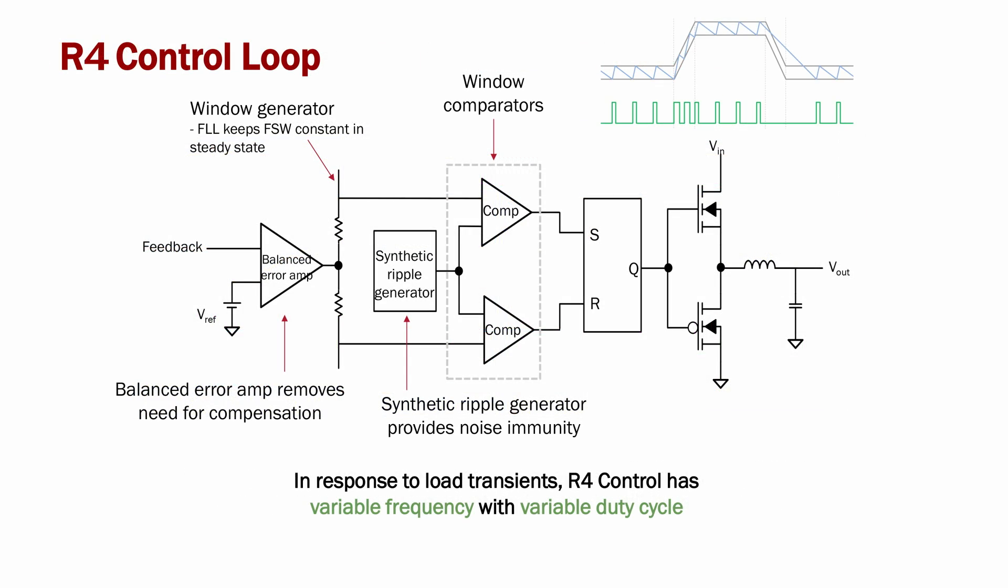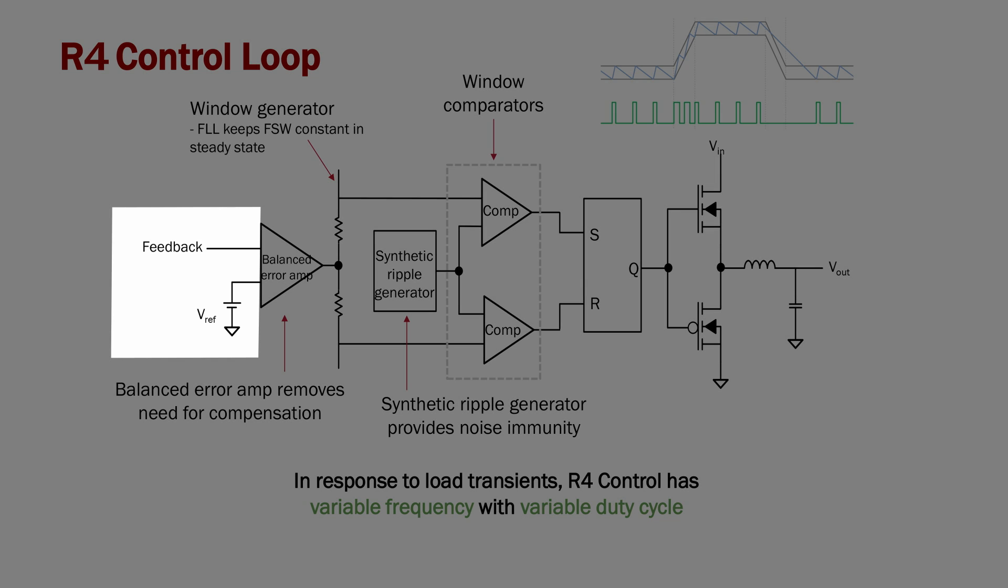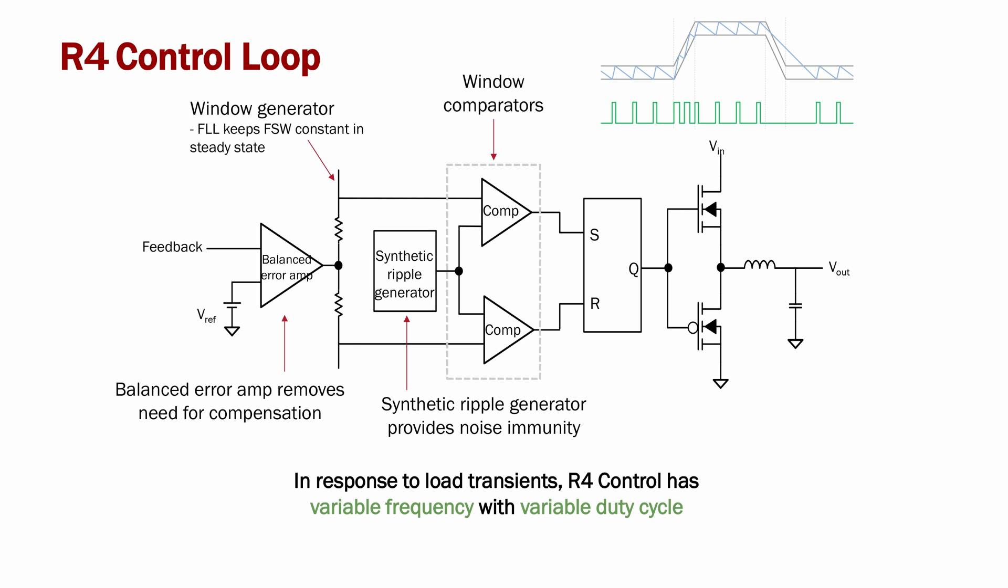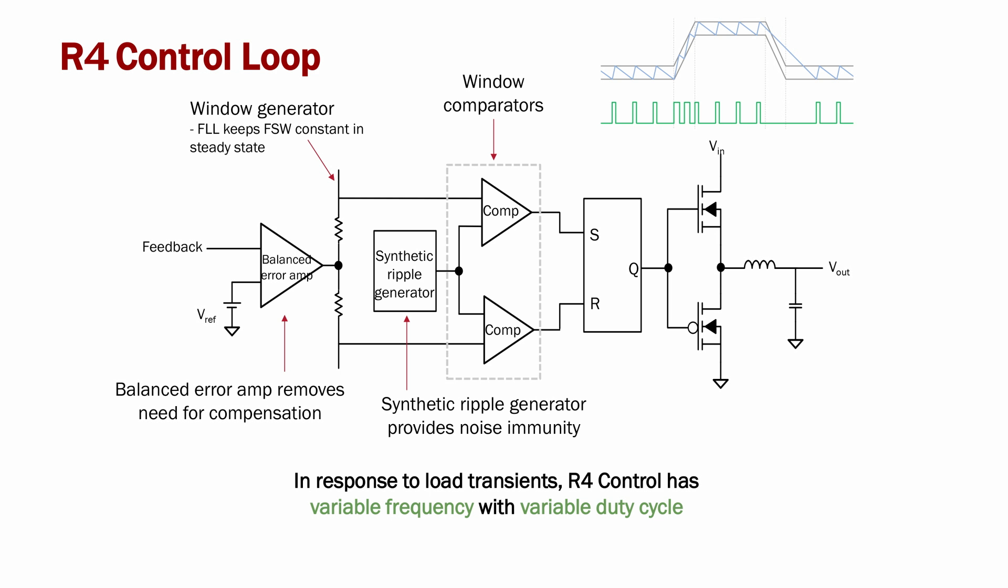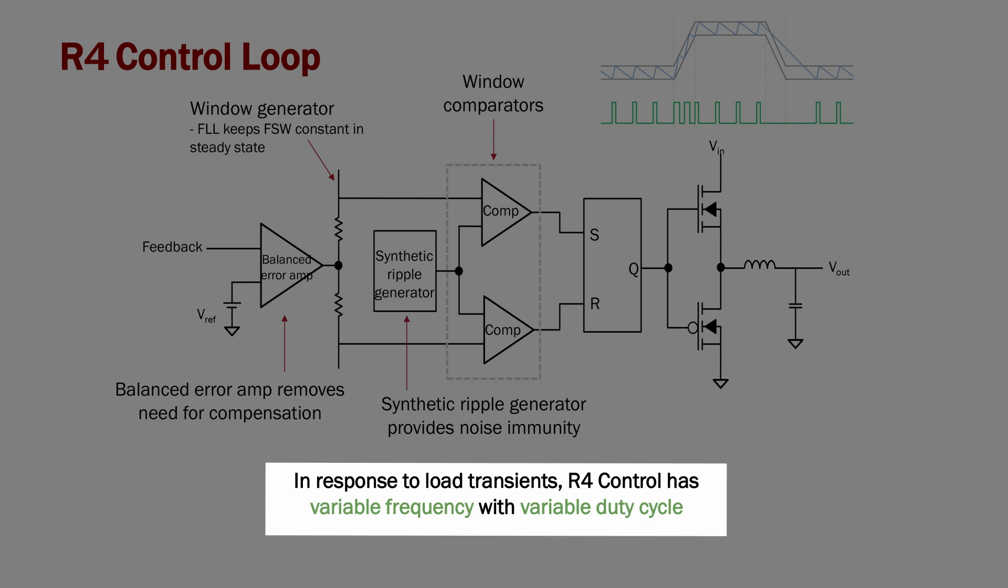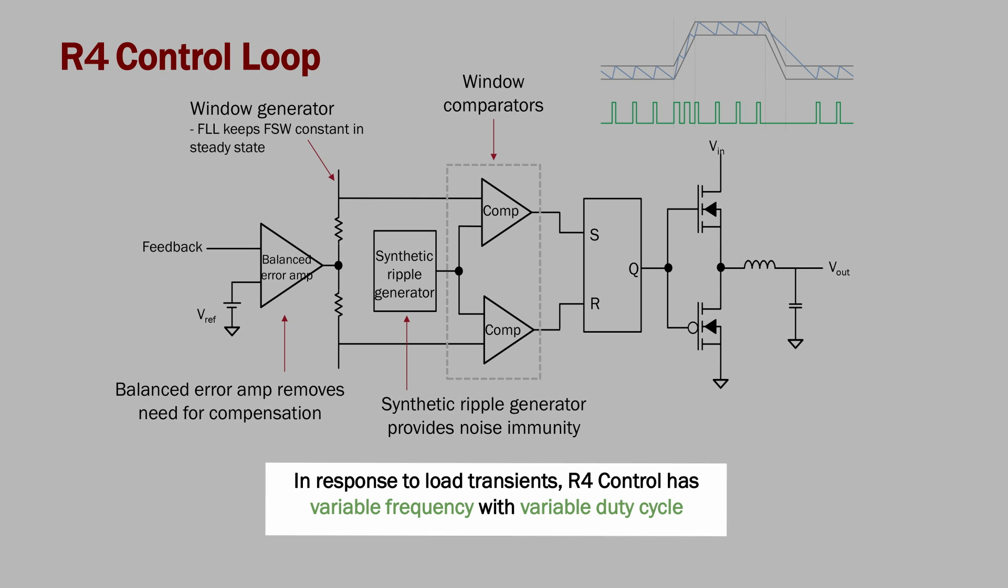On this slide, we show the R4 control loop. This is Intersil's proprietary control loop based on hysteretic current mode control. There is a feedback signal that gets compared to a reference, and that is used to generate a window voltage. Inside that window voltage, a synthetic ripple current is bounded using window comparators. When the synthetic ripple current hits the lower comparator, the high side FET is turned on, and when it hits the high side comparator, the high side FET is turned off. This is used to generate the PWM signal that drives the power stage. This architecture offers a variable frequency and variable duty cycle architecture.